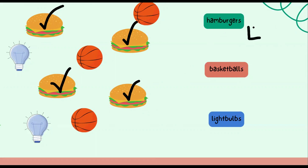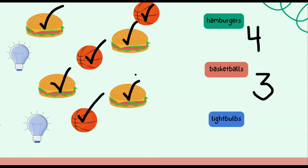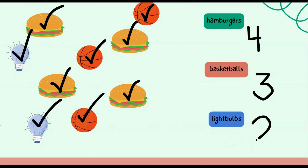Let's count how many basketballs there are. Are you ready? Count with me: one, two, three. There are a total of three basketballs. Okay students, let's count the light bulbs now. Here we go: one, two. There are two light bulbs in this object set. We have four hamburgers, three basketballs, and two light bulbs. Awesome job!